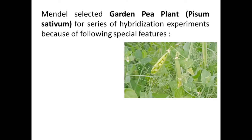Now we will discuss Mendel's experiment in detail. Mendel selected the garden pea plant, known as Pisum sativum, for his series of hybridization experiments. He chose this plant for several reasons: it has special features that made it ideal. First, it is easy to grow — no special conditions required.